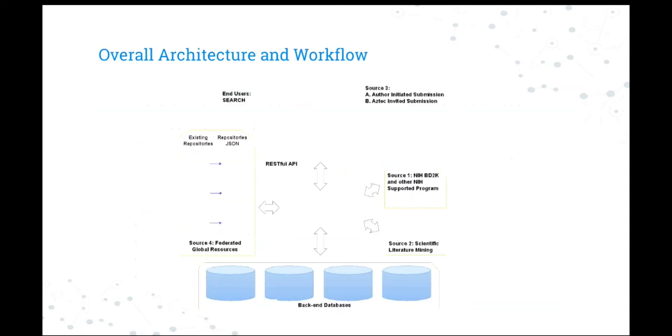This diagram gives a quick overview of Aztec's structure. The web application provides an interface to search for tools, and users can interact through a web application or directly through an API. The initial resources are retrieved from four primary sources: NIH DB2K and other NIH-supported programs, scientific literature mining, author submission, or federated goal resources. All of these resources are stored in our databases and indexed to support an integrated and powerful search service.